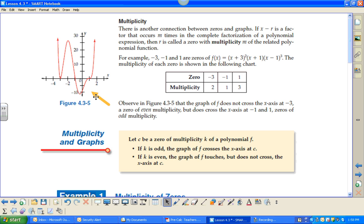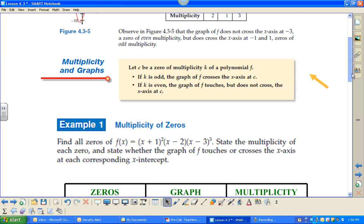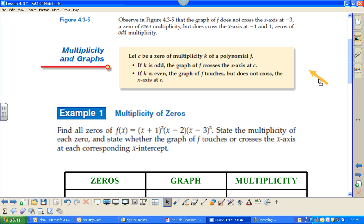So if the multiplicity is even, it's always going to touch the graph. If it's odd and degree 1, it's going to go through the graph. And if it's odd degree greater than 1, it's going to bend when it goes through the graph. Here they talk about it more: If k is odd, that's the multiplicity, the graph of f crosses the x-axis. And if it's even, then it touches but does not cross.